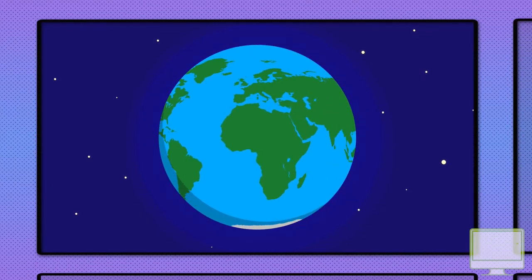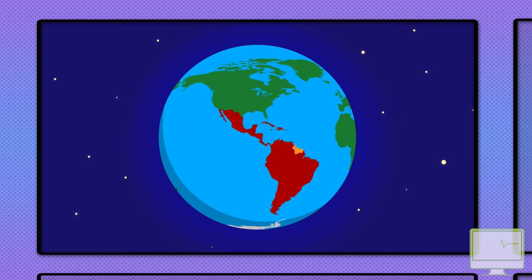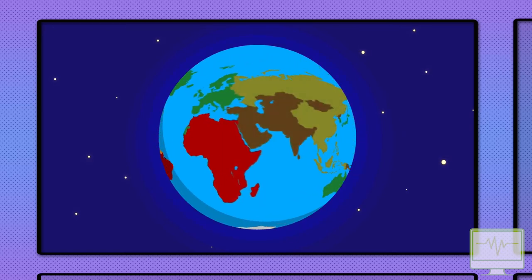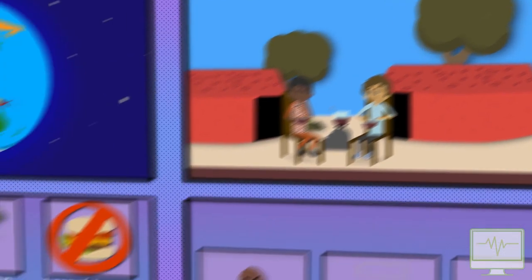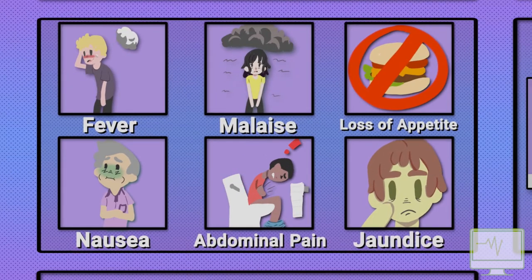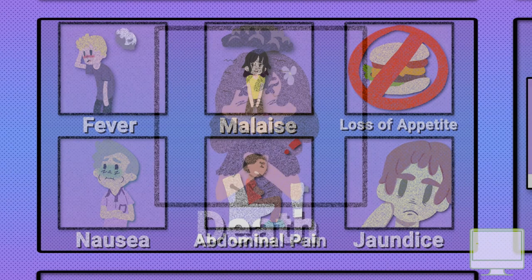Take-home message: Hepatitis A is a viral liver infection that is endemic in areas of poor sanitation. It is usually passed on by contaminated food and water. Symptoms are generally mild, especially in children, and death is very rare.